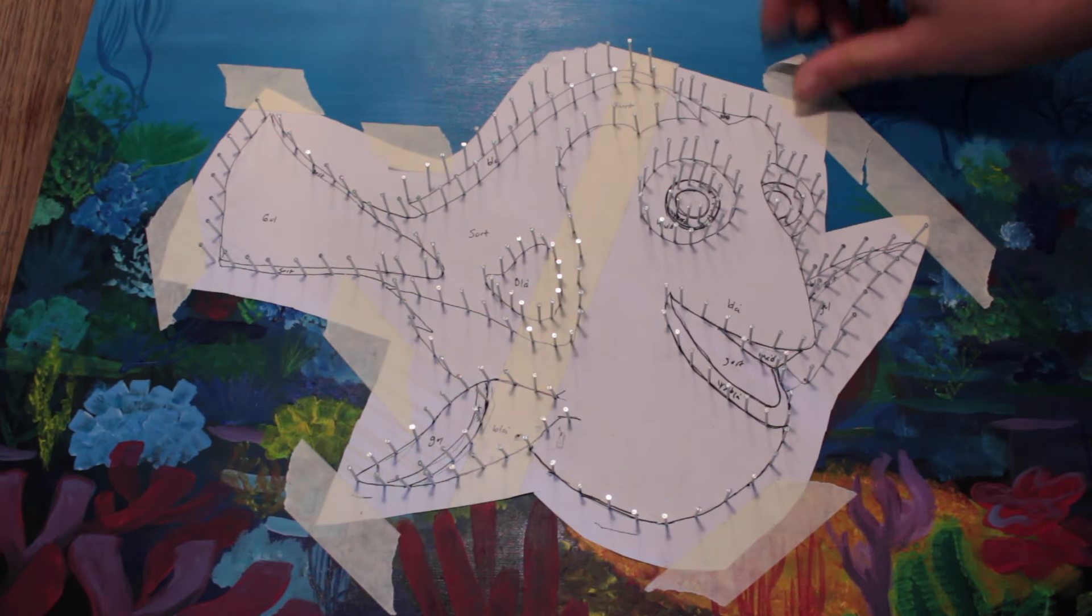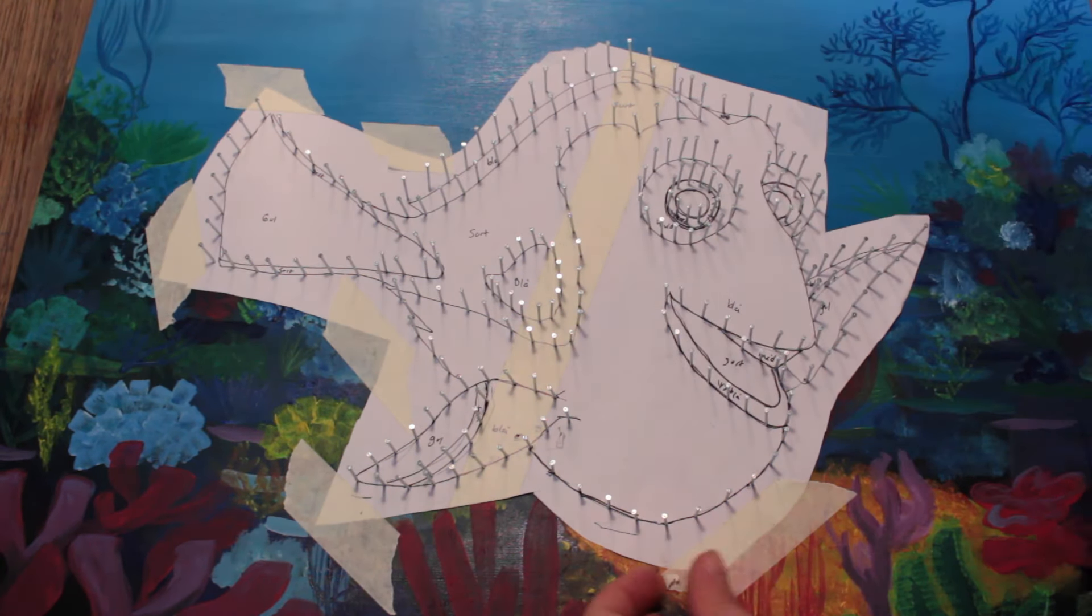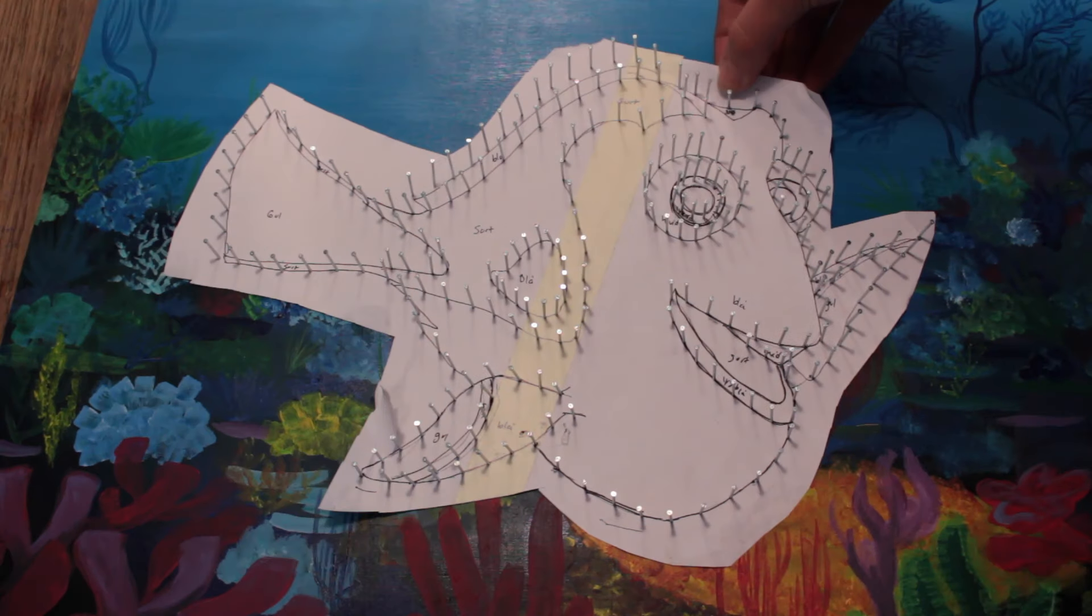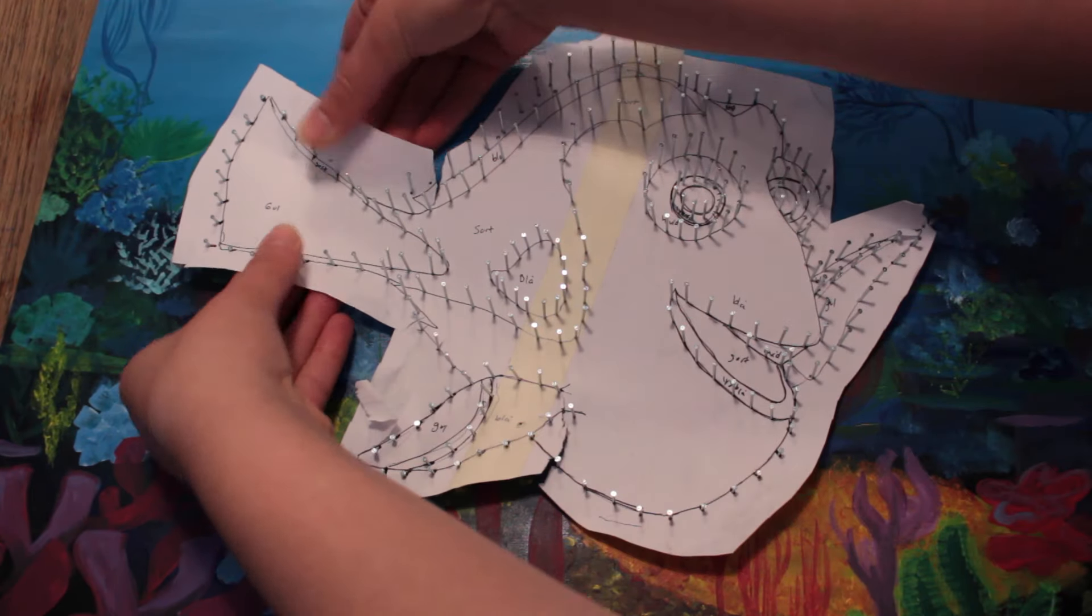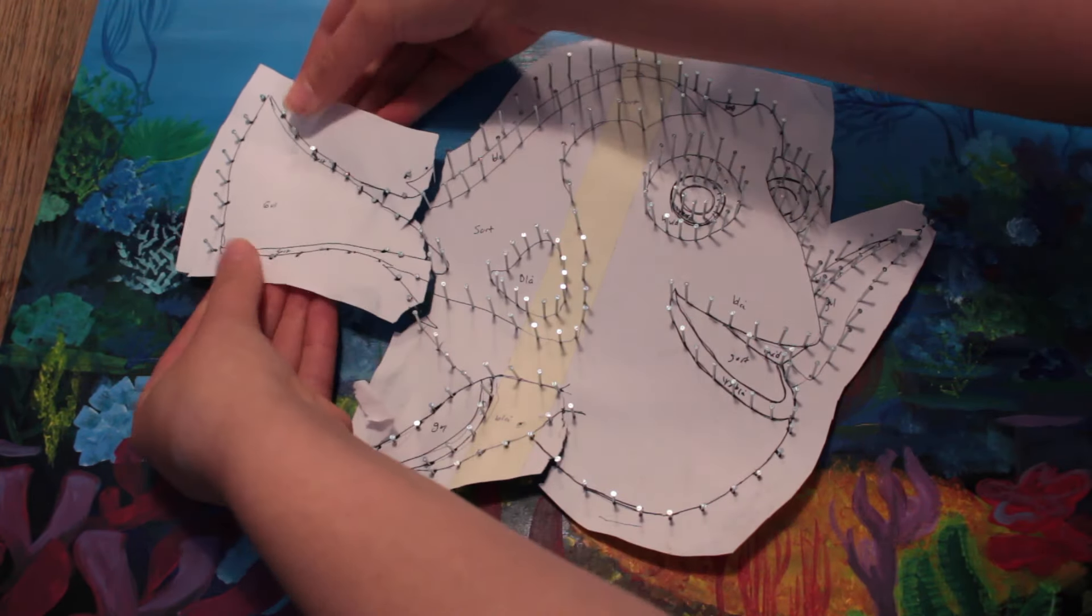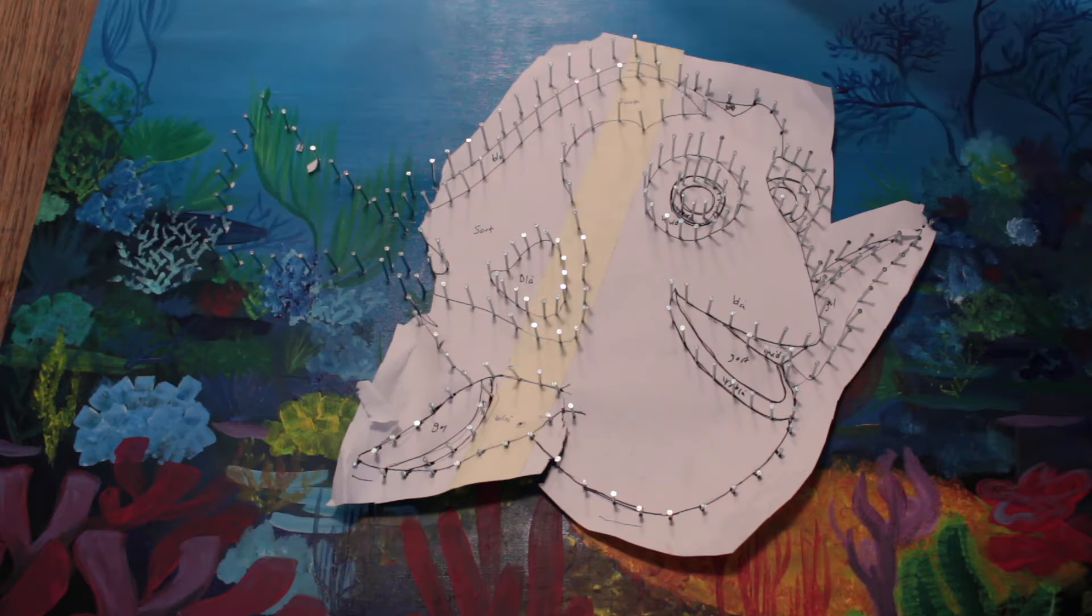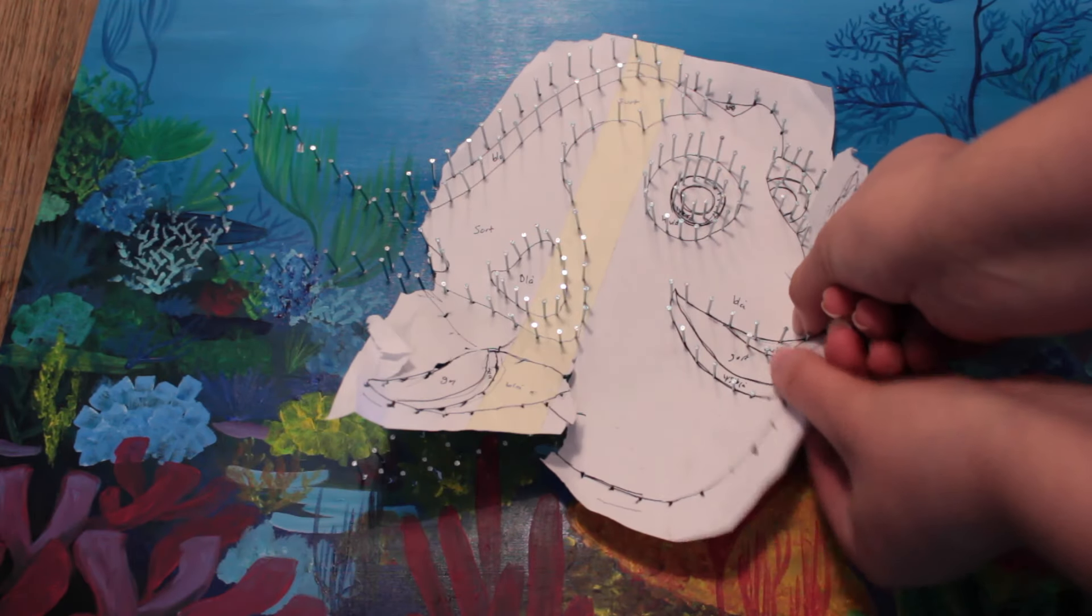Now when you're done with your hammer and nails, remove the painter's tape. Now we need to remove the paper from the nails, so gently remove it by pulling it upwards. It's okay if the paper rips or tears a little bit because you don't really need it anymore.